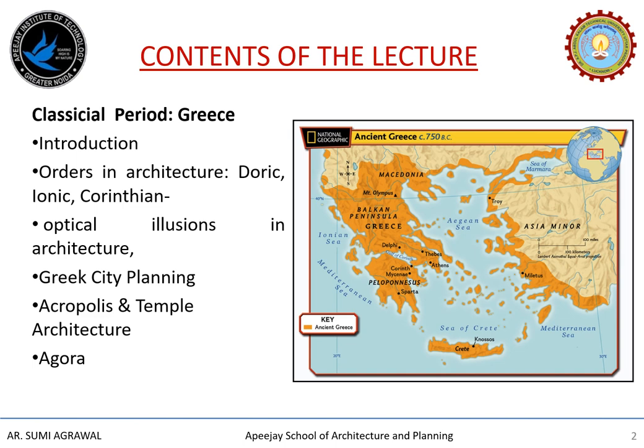This slide shows the contents we are going to discuss through this lecture. It will be mainly focused on the Classical period of Greece. The main subheadings we are going to cover are the brief introduction, the orders in architecture which include Doric, Ionic and Corinthian orders, the optical corrections in architecture, Greek city planning, Acropolis and temple architecture, and lastly the Agora.